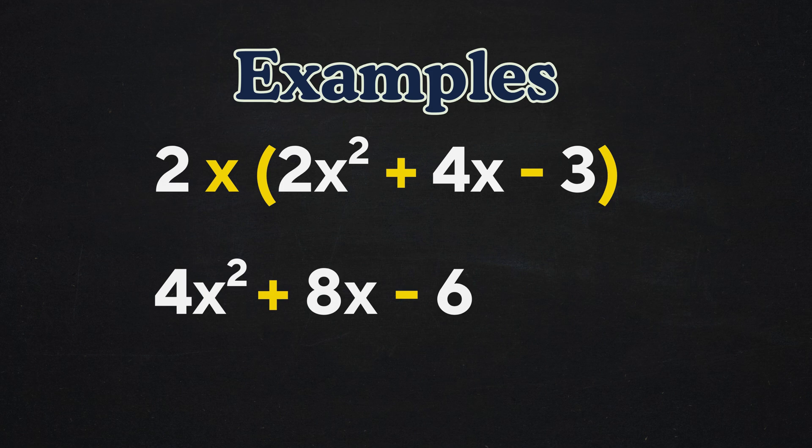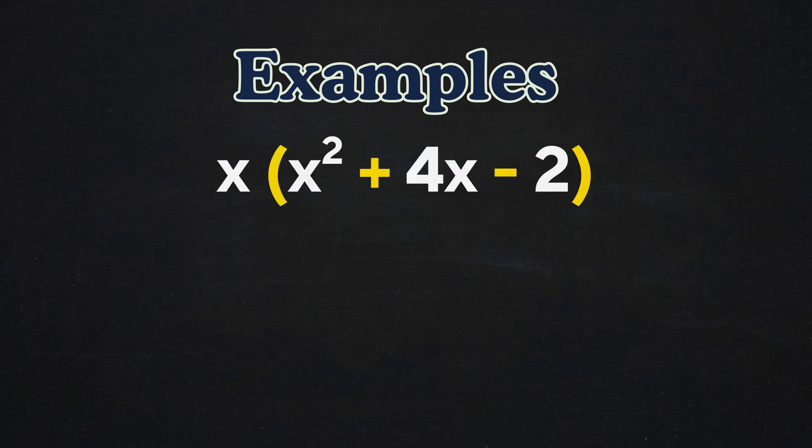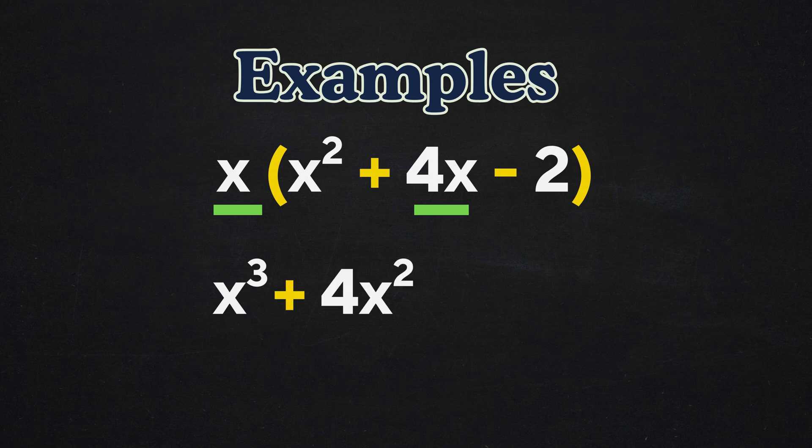Let's see another example. x times the group x squared plus 4x minus 2 becomes x times x squared, which gives us x cubed, since that would be 3 x's multiplied together. x times 4x, which gives us 4x squared, and x times negative 2, which gives us minus 2x. So the distributed form is x cubed plus 4x squared minus 2x.